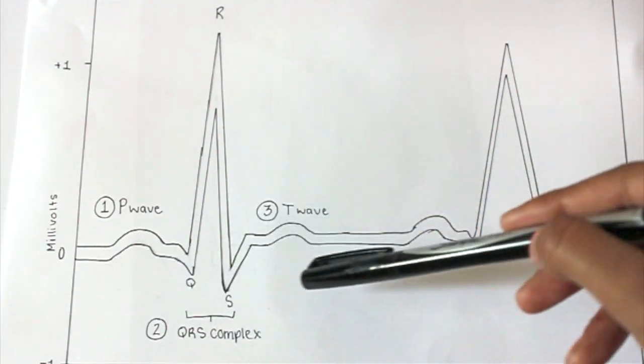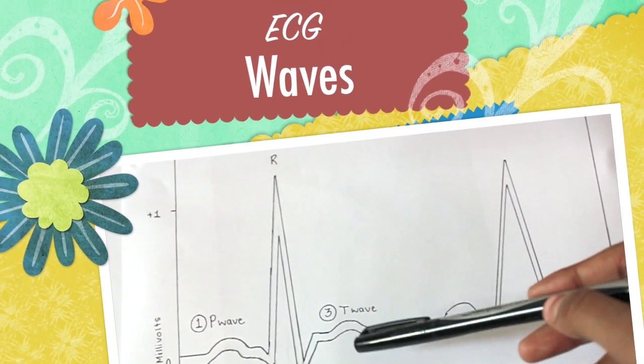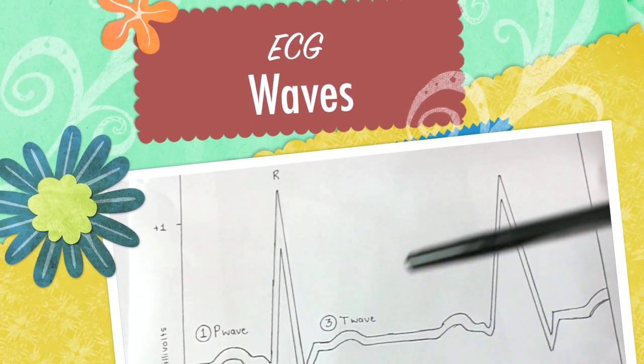Then we have a small wave, the T wave at the end, and that signifies the repolarization of the ventricles.